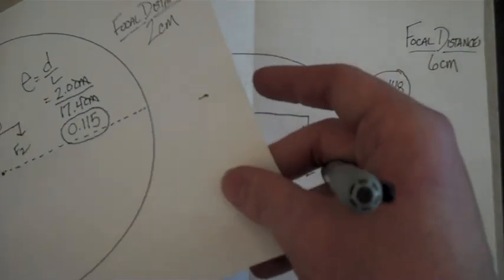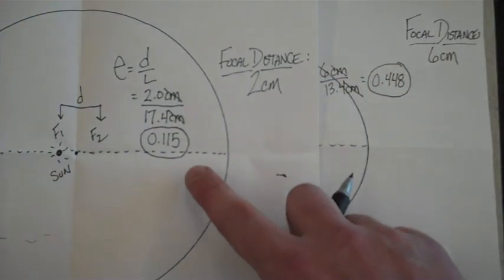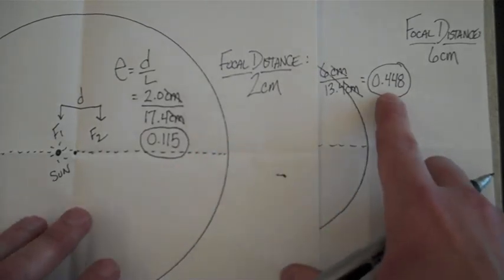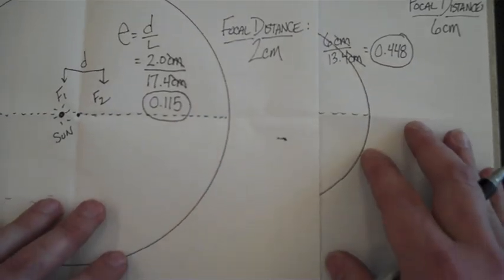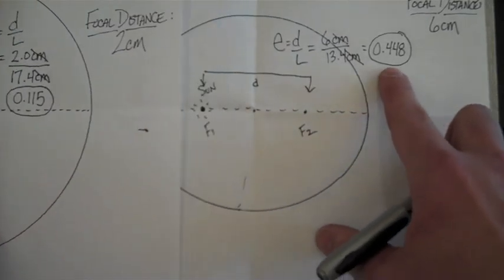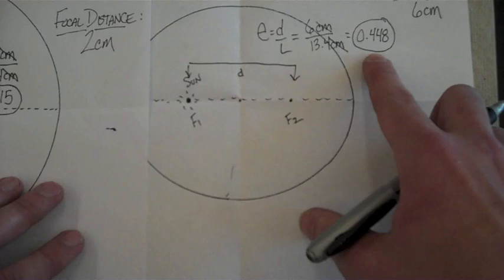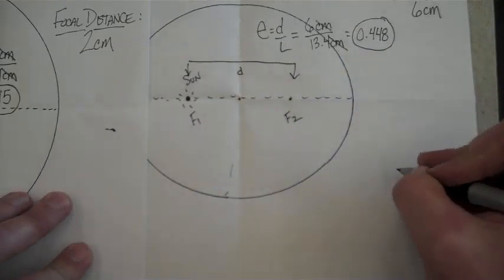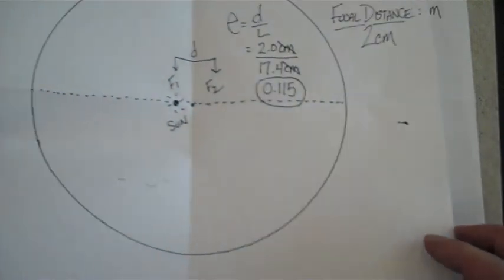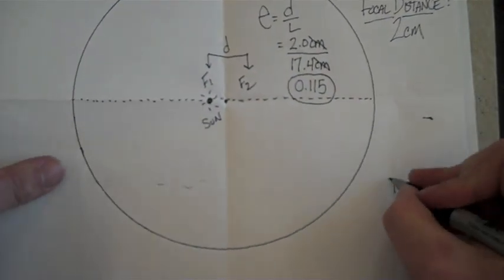So now we have two eccentricities to compare. We have an eccentricity of 0.115 and an eccentricity of 0.448. So you need to understand what these numbers mean now. The bigger the number, the more flattened it's going to become. So the second ellipse that we drew is very flat. The first ellipse that we drew is a little bit rounder.